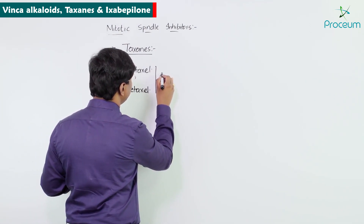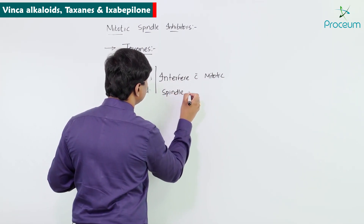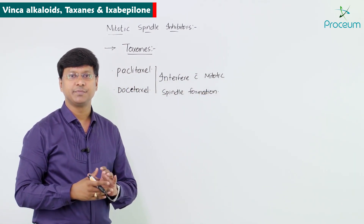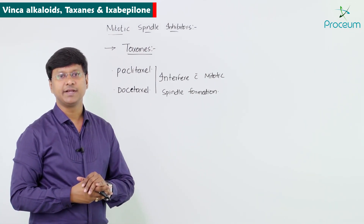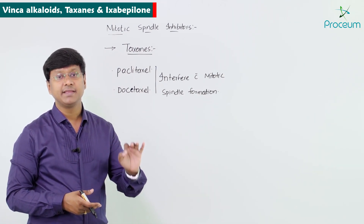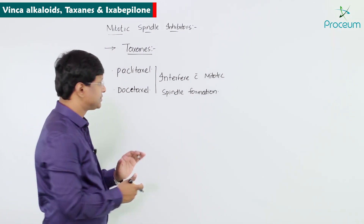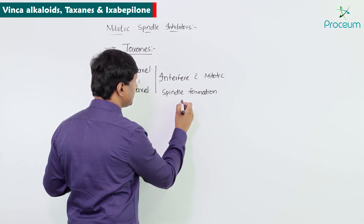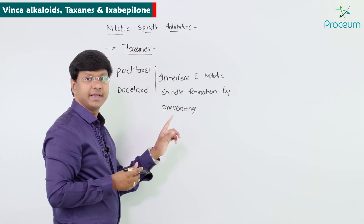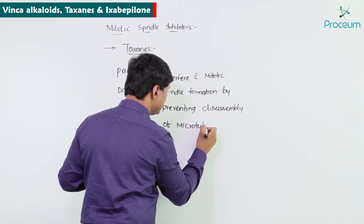Paclitaxel and docetaxel interfere with mitotic spindle formation by preventing the disassembly of microtubules. This is the key mechanism distinguishing taxanes from vinca alkaloids, which inhibit polymerization rather than disassembly.